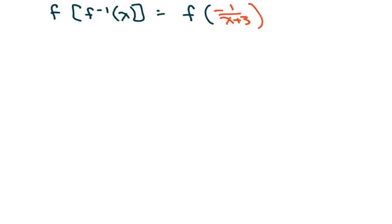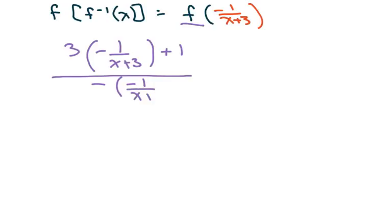So now I'm going to write my outer function, which is f as 3 times negative 1 over x plus 3 plus 1, over negative negative 1 over x plus 3. In this case, the negatives will just cancel. Two negatives make a positive.